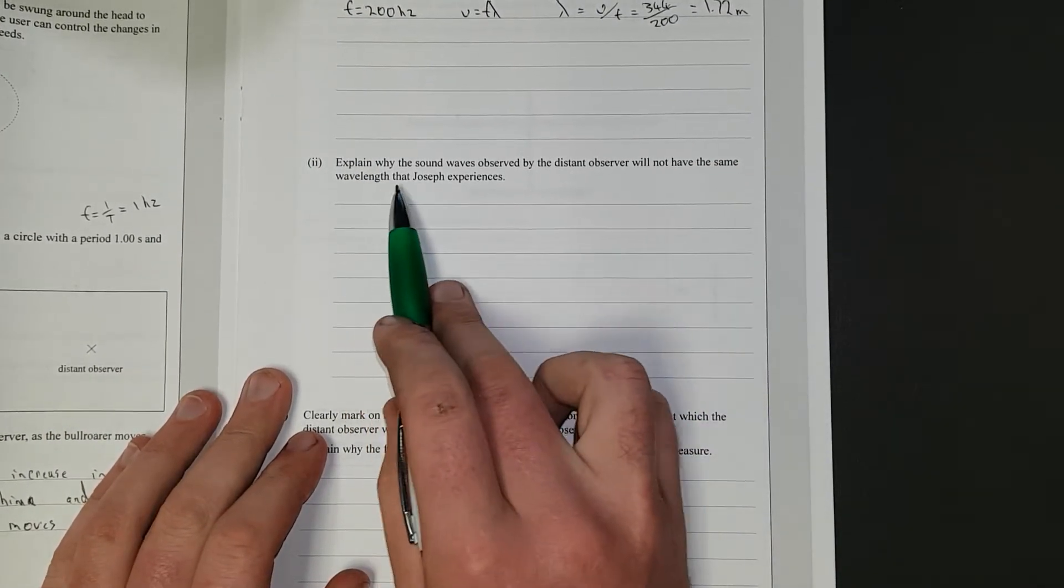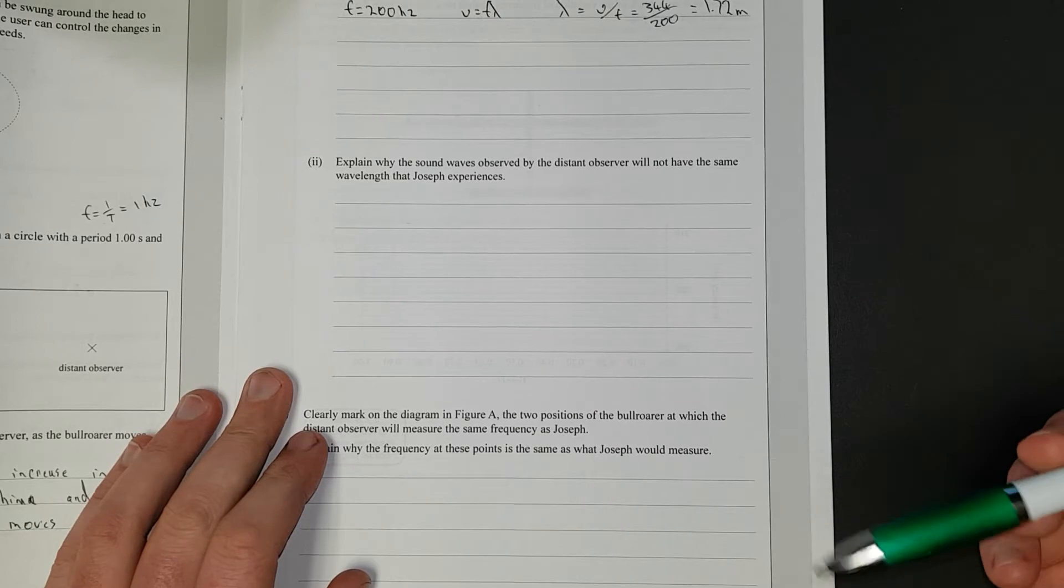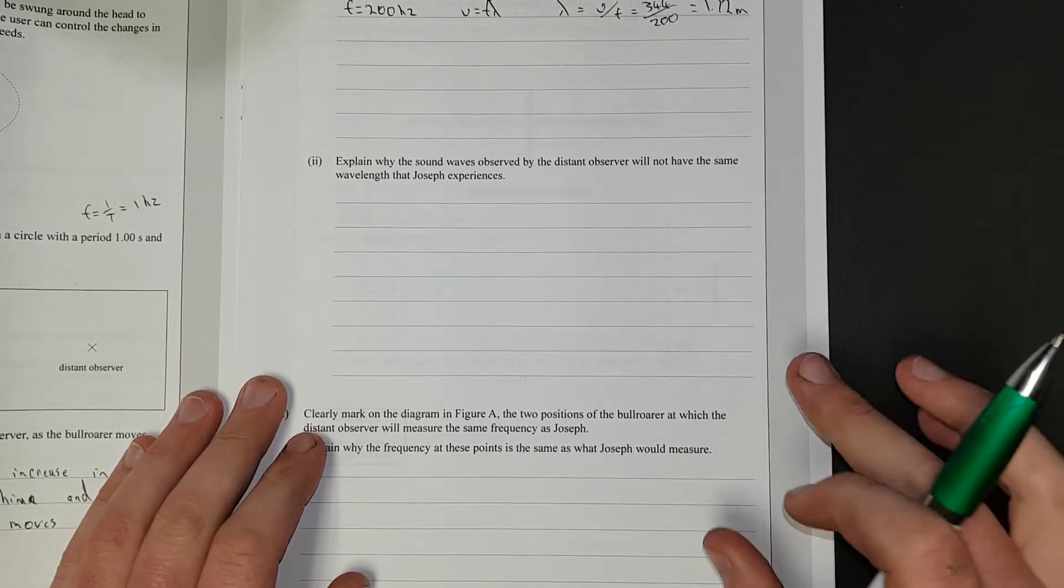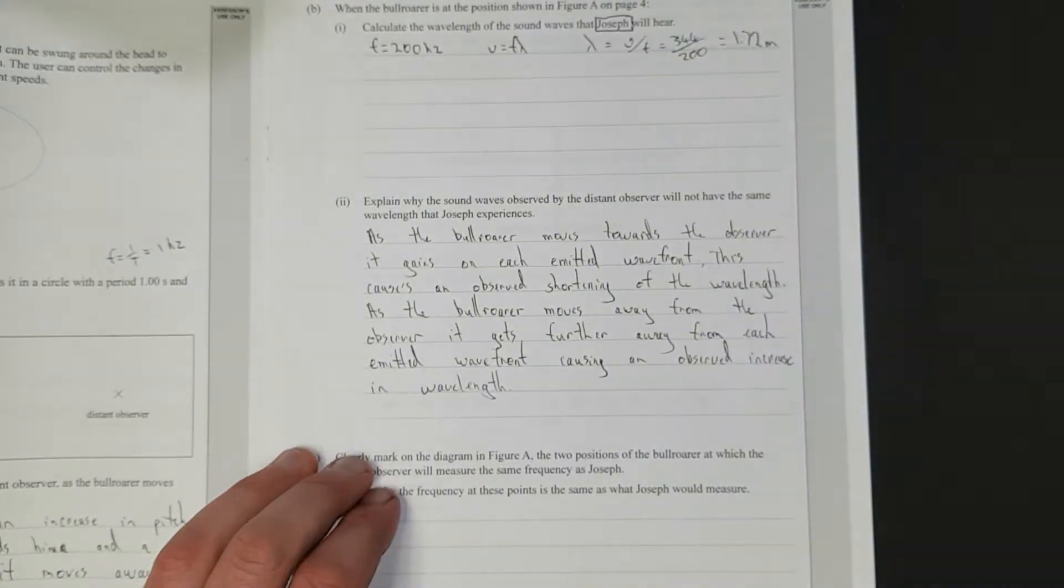Explain why the sound waves observed by the distant observer will not have the same wavelength that Joseph experiences. So I'll just write that out.